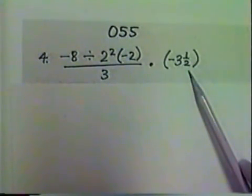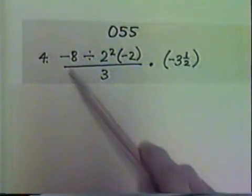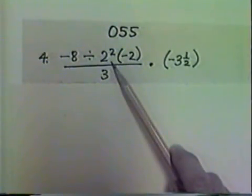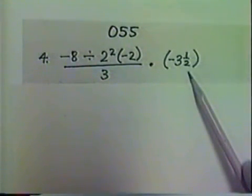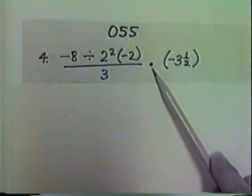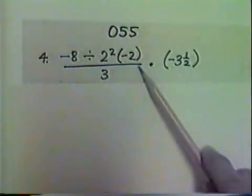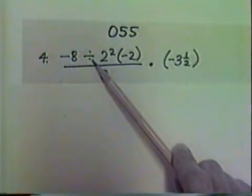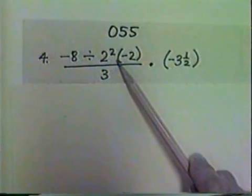Where do we begin? Notice that the only symbol of inclusion expression that we have is actually the fraction bar. The parentheses we have around the negative 2 tell us to multiply. The parentheses around the negative 3 and 1 half keep the negative 3 and 1 half separate from the multiplication symbol preceding. And so the only symbol of inclusion we have is the fraction bar. That means we work above the fraction bar first. In that expression we have divide, exponent, and multiply, which is done first. The exponent.